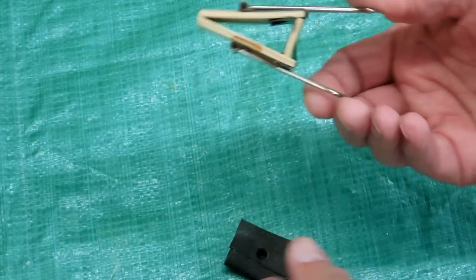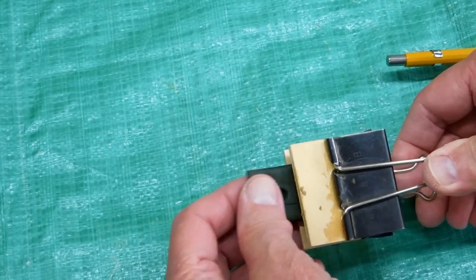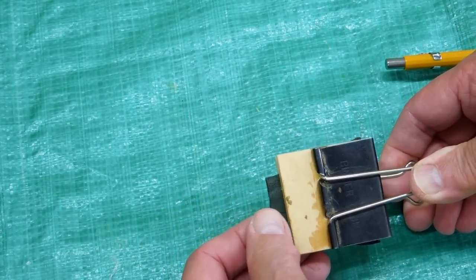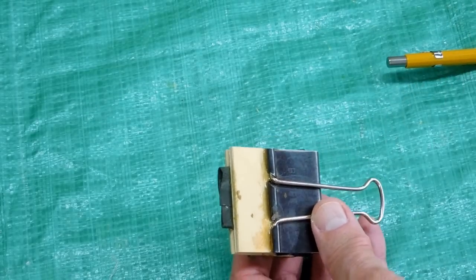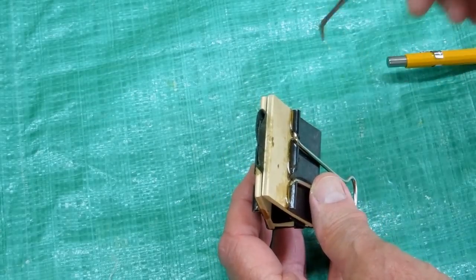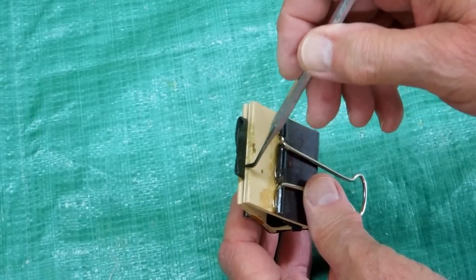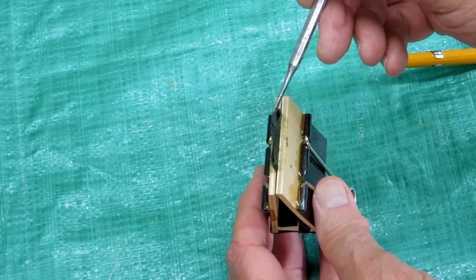Using a modified stationary clamp, clamp that across that edge. All that's going to do is keep glue from going any further than where the clamp is.